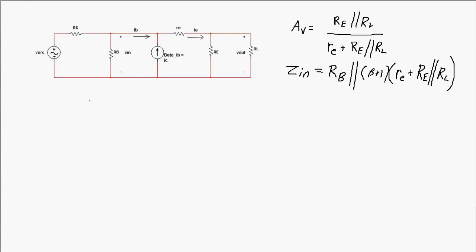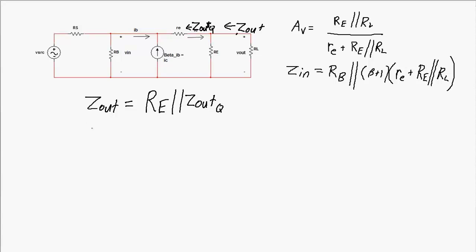The output impedance is the impedance seen looking back into the circuit from the output node. It consists of RE in parallel with whatever is seen looking back into the transistor, ZoutQ. That transistor output impedance ZoutQ is the internal re in series with the resistance seen on the base side of the transistor, ZoutB.